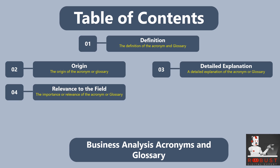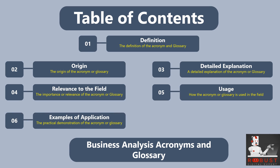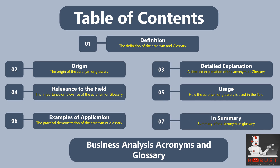Relevance to the field: We explain why the term is essential and relevant, discussing how it addresses a specific need, solves a common challenge, or represents a key concept within the discipline. Usage: We describe how the term is used in practice, explaining the scenarios or contexts in which it is commonly employed. Examples of application: We provide two concrete examples demonstrating the practical application of the term and the benefits it brings. In summary: We summarize the term, offering a brief and concise overview that allows you to understand it quickly.